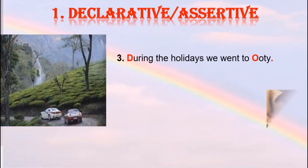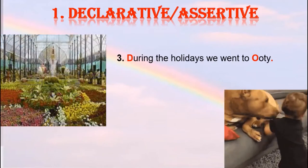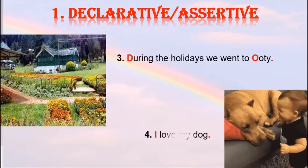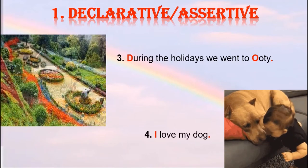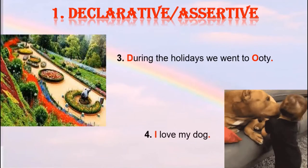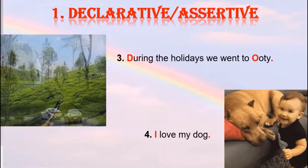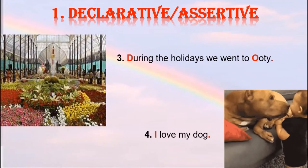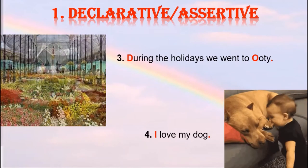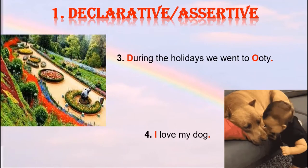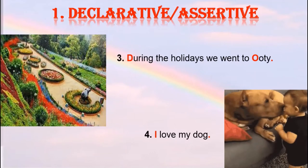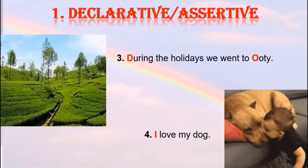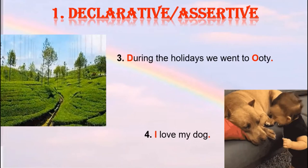Let us take another example: 'I love my dog.' Here again it states that he loves his dog, so the sentence will end with a full stop. I hope students the concept of declarative or assertive sentences is clear to you all.